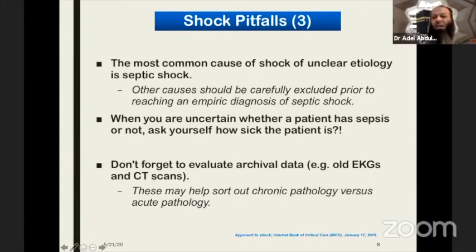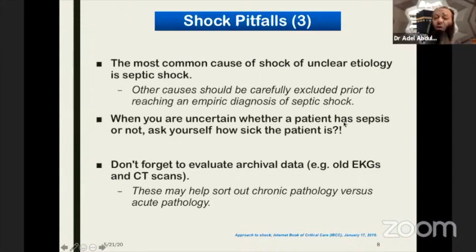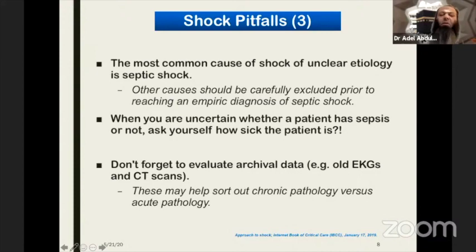The most common cause of shock of unknown etiology is usually septic shock, but other causes should be carefully excluded before reaching an empiric diagnosis of septic shock. When uncertain, assess how sick your patient is hemodynamically — airway, mentation, and other parameters. Do not forget to evaluate archival data such as old ECGs, prior MI or bundle branch block history, prior imaging showing gallstones, or previous surgical history. This helps delineate chronic versus acute pathology.